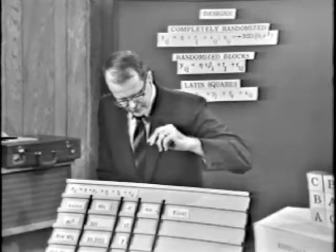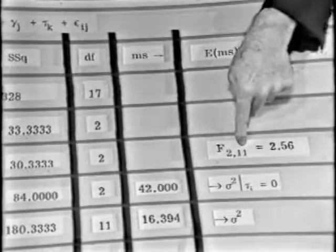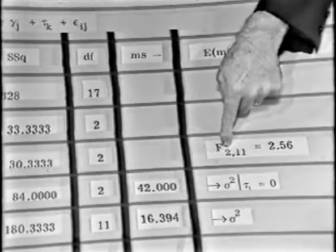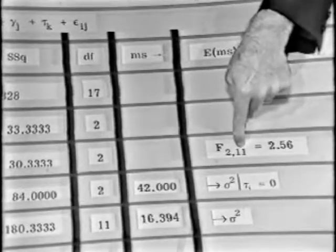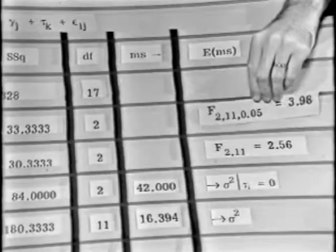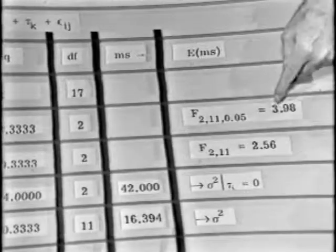So I have an F with two and eleven degrees of freedom. Two in the numerator estimate of the variance and eleven in the denominator estimate of the variance. Comes out equal to two point five six. What's the critical value of F with two and eleven? The critical value of F is three point nine eight.